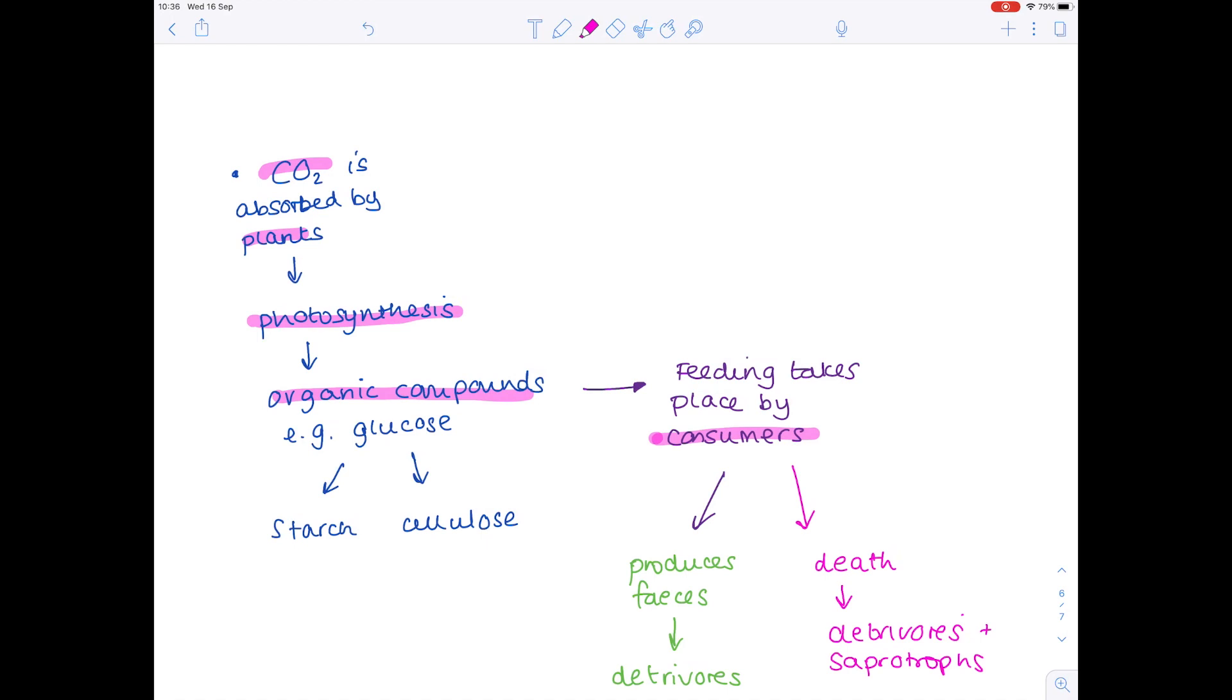The consumer could itself be eaten, but meanwhile while it's alive it's producing feces which are used by detritivores, and when they die detritivores and saprotrophs will again be able to feed. And so that starting point of carbon dioxide is how everything else will survive in the food web.